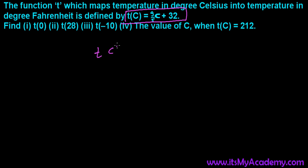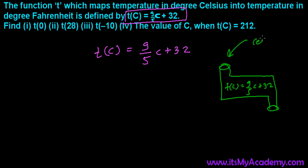Let me first write our function: t(C) equals 9 over 5C plus 32. So here we have a machine that converts our degree Celsius into degree Fahrenheit. From here, you're going to put temperature in Celsius and here you'll get output as Fahrenheit. So if I'm going to put C, then I'm going to get 9 by 5C plus 32. If I'm going to put anything, let's say X, then I'll get 9 by 5X plus 32.